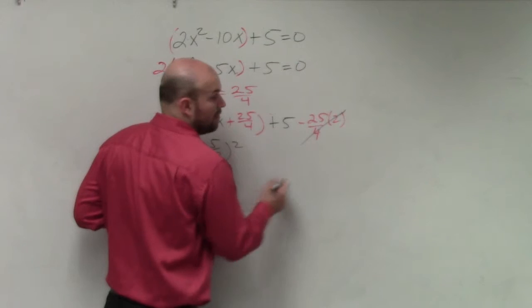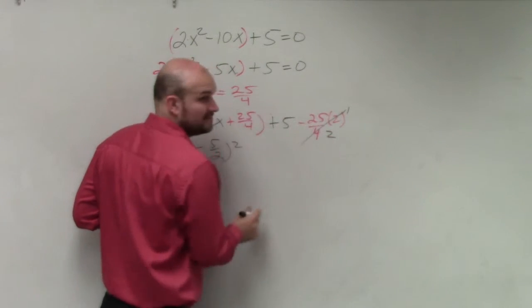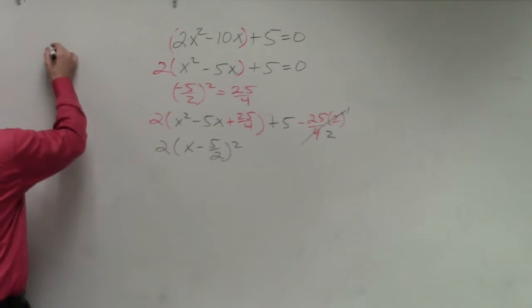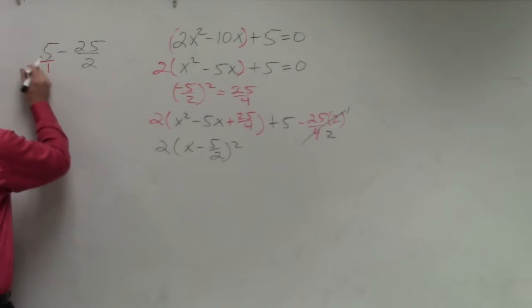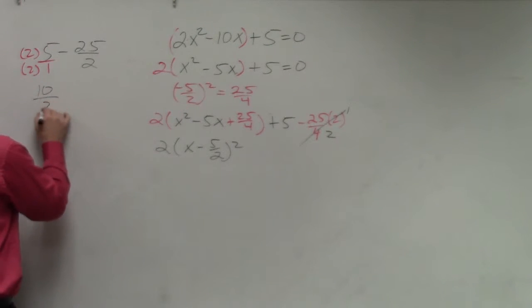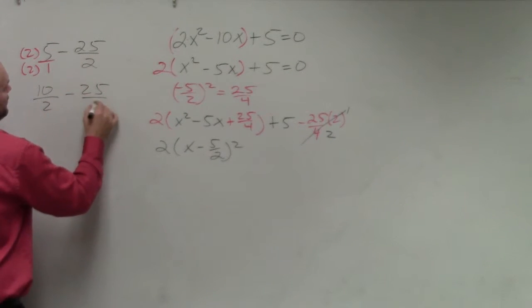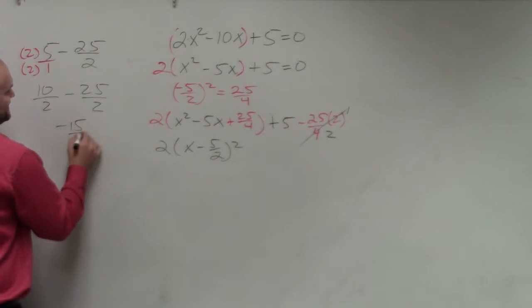This 2 over 4 can be simplified to 1 half. So in reality, I have 5 minus 25 over 2. Put that over 1. Multiply to get common denominators. This is 10 over 2 minus 25 over 2, which is a negative 15 over 2.